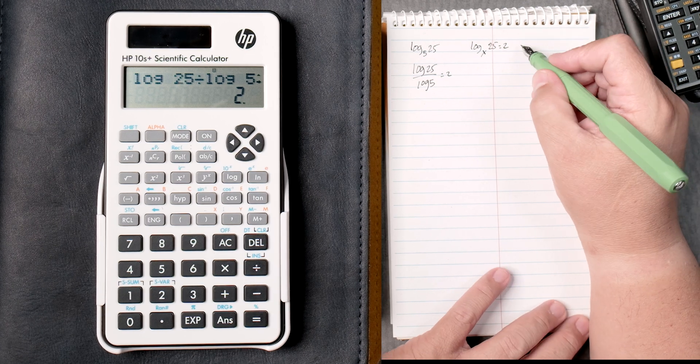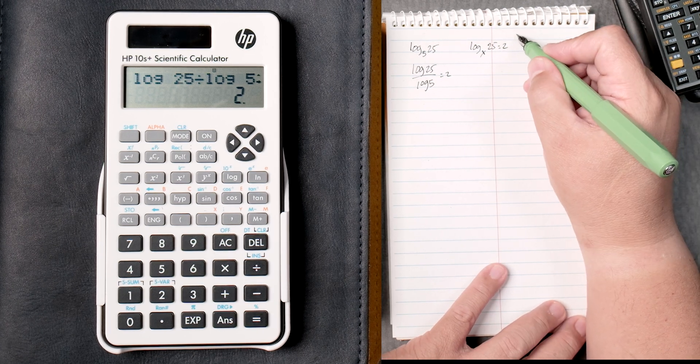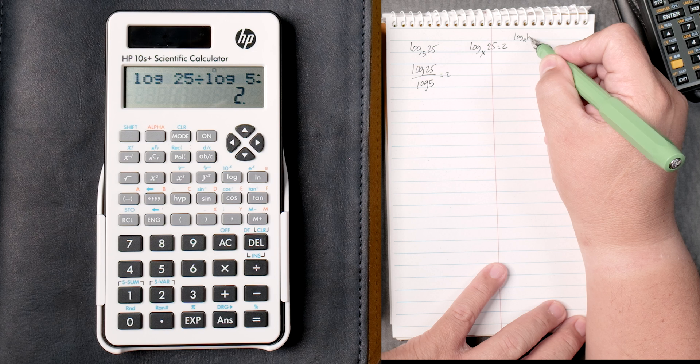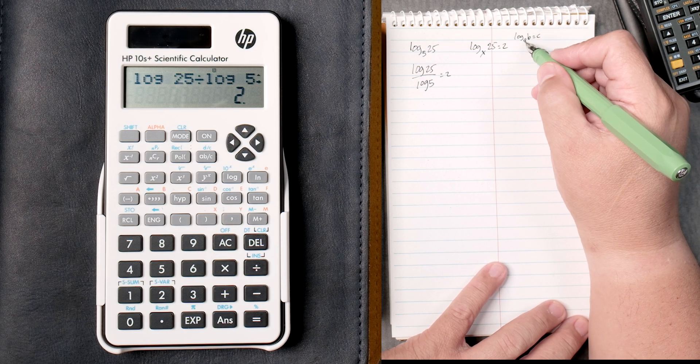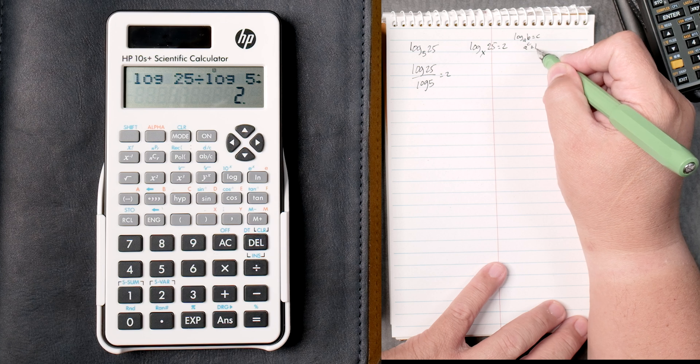There's a rule that says log of a, b equals c. It might not be exactly like that with the letters, but the rule is right. a to the c power equals b.